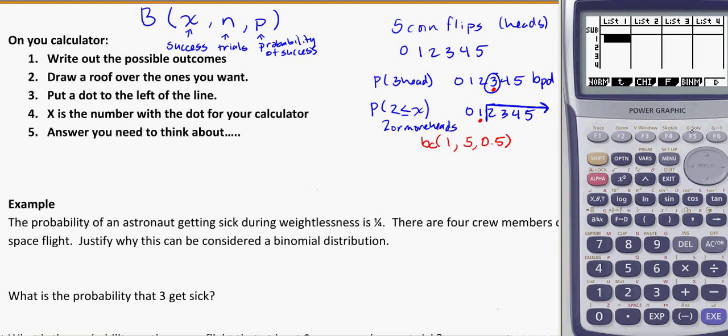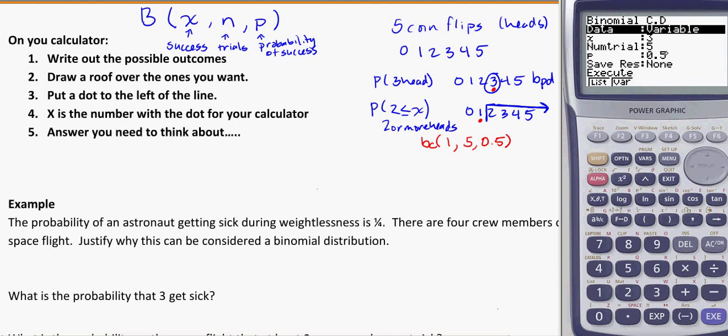So my calculator is actually going to solve for this part. It's going to solve for zero or one trials. So if we go into this, distributions, binomial. Here, not precise. I'm looking for a range of values. I'll use the CD.